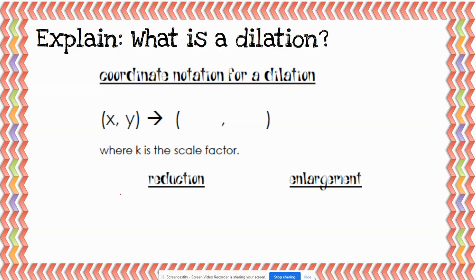The coordinate notation for a dilation is that x and y become kx and ky, where k is the scale factor. What that means is that you will multiply both coordinates — both x and y — by the scale factor.